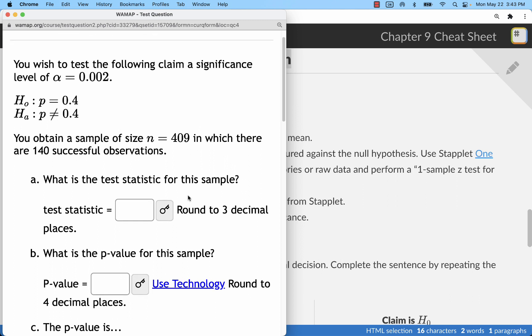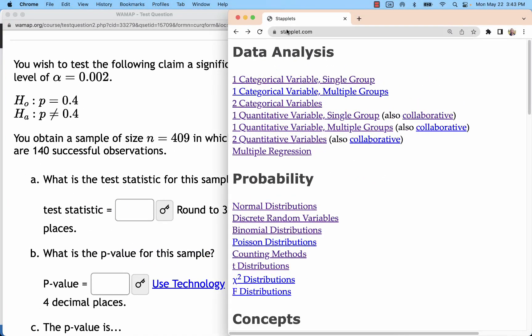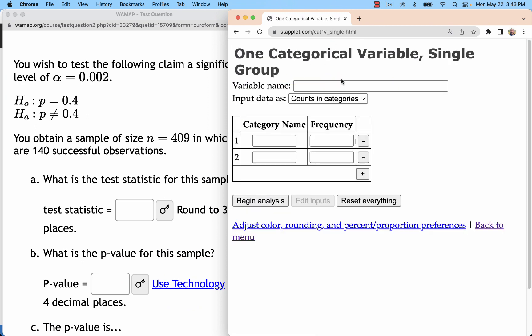So, going into our problem, we've got a sample of 409 where there's 140 successes. From staplet.com, we'll go to one categorical variable, single group.